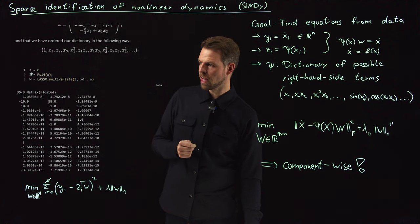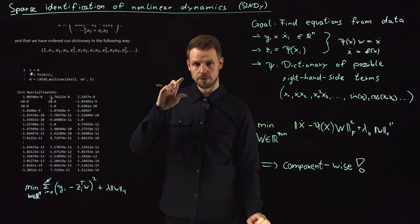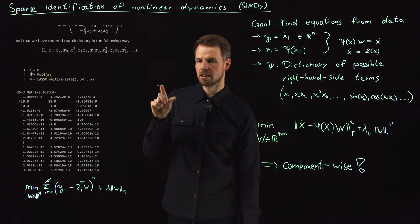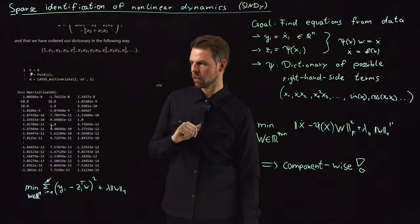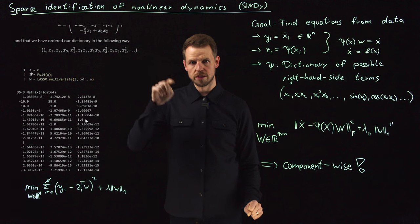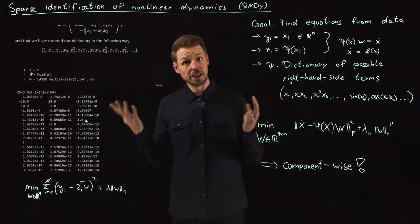In the second equation, you find 28 times x1 minus x2, and then we have this x1, x3 cross term. So you get the minus 1 here. And in the third equation, you get minus 8 over 3 times x3. And here, 1, so this was x1 times x2. So we have identified the system. Given data, we have identified it, but we have used the most simple case where we have no noise whatsoever.